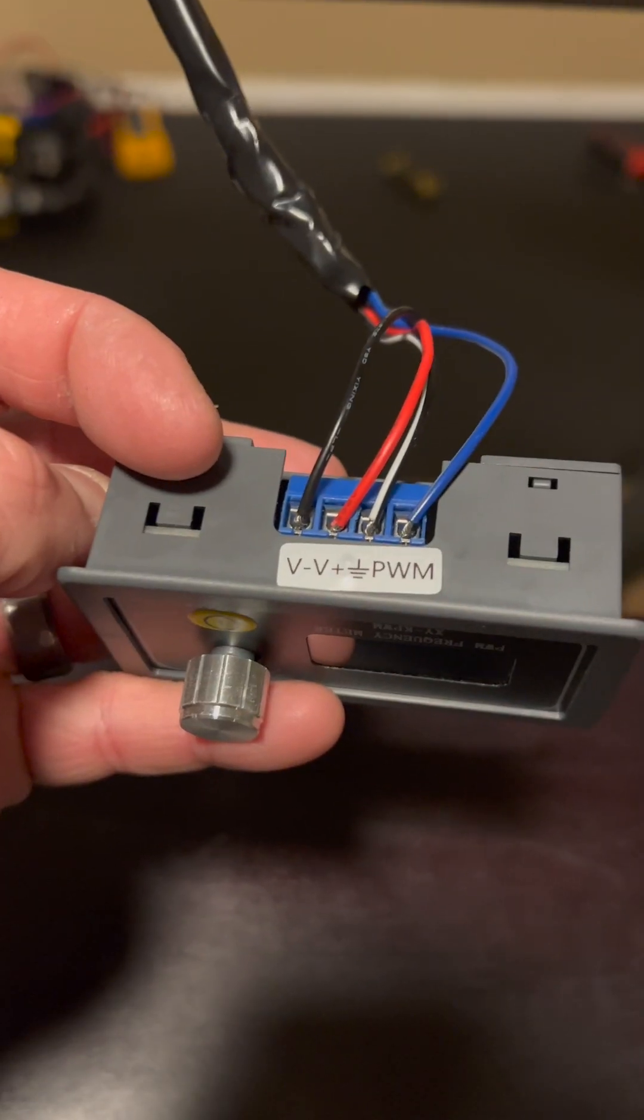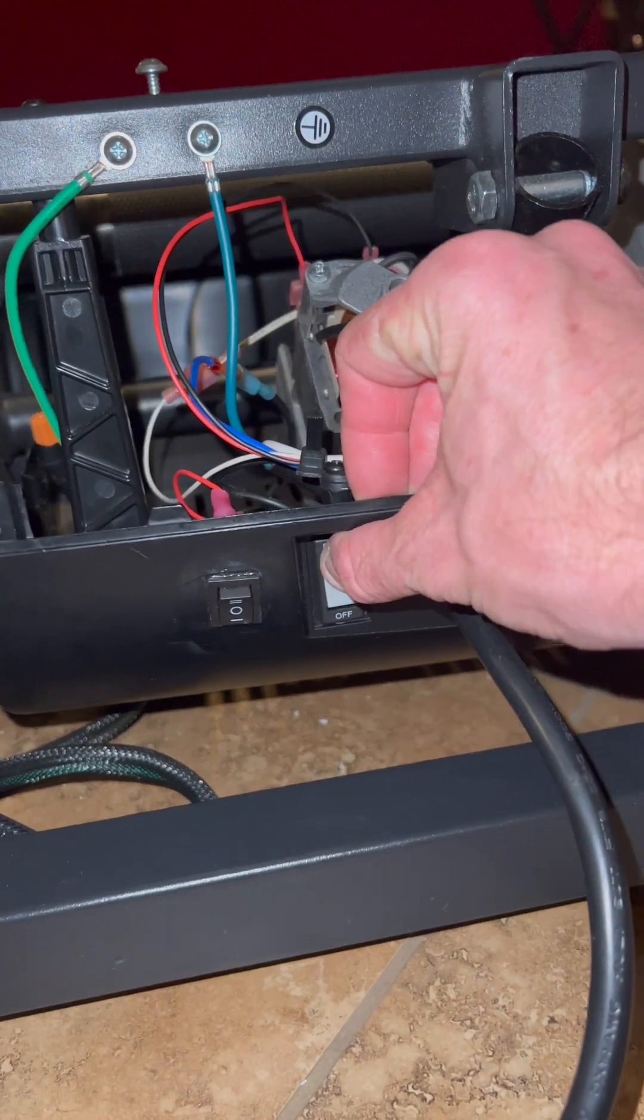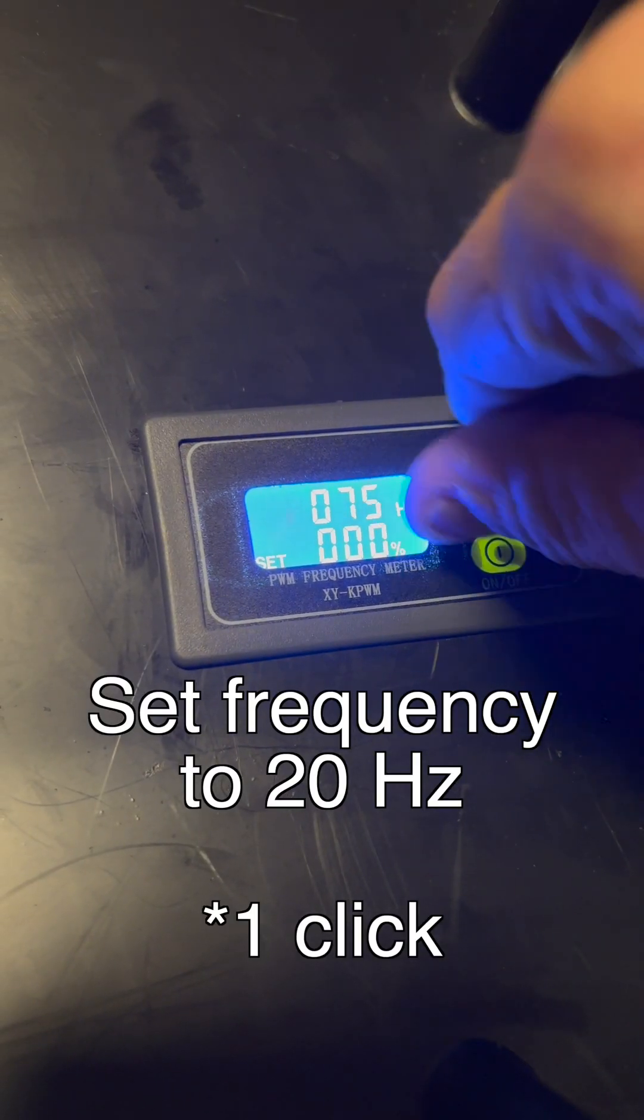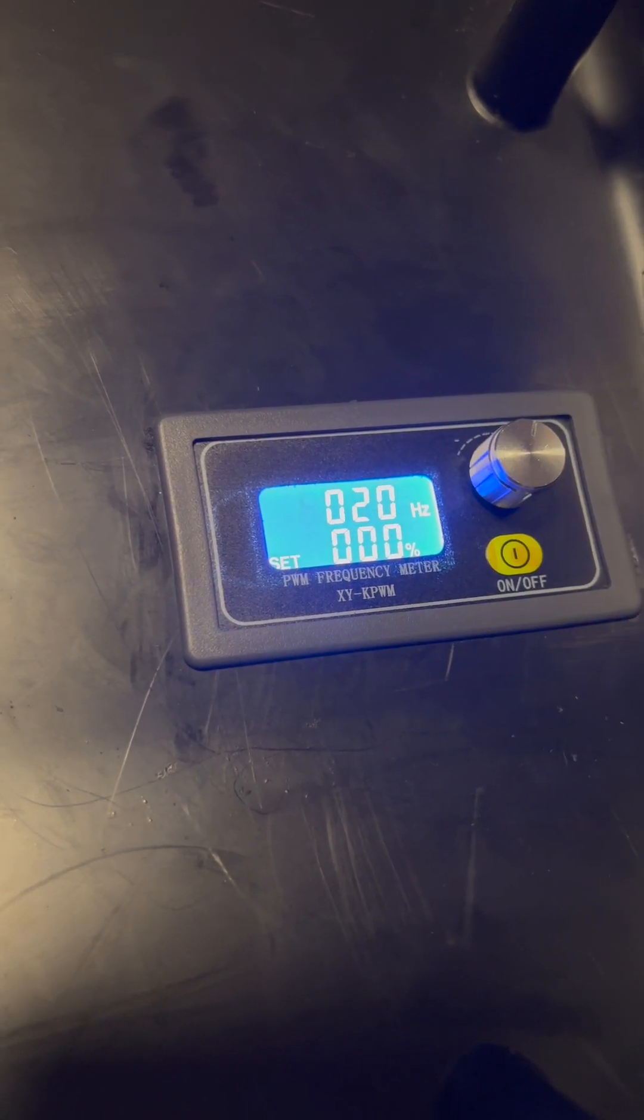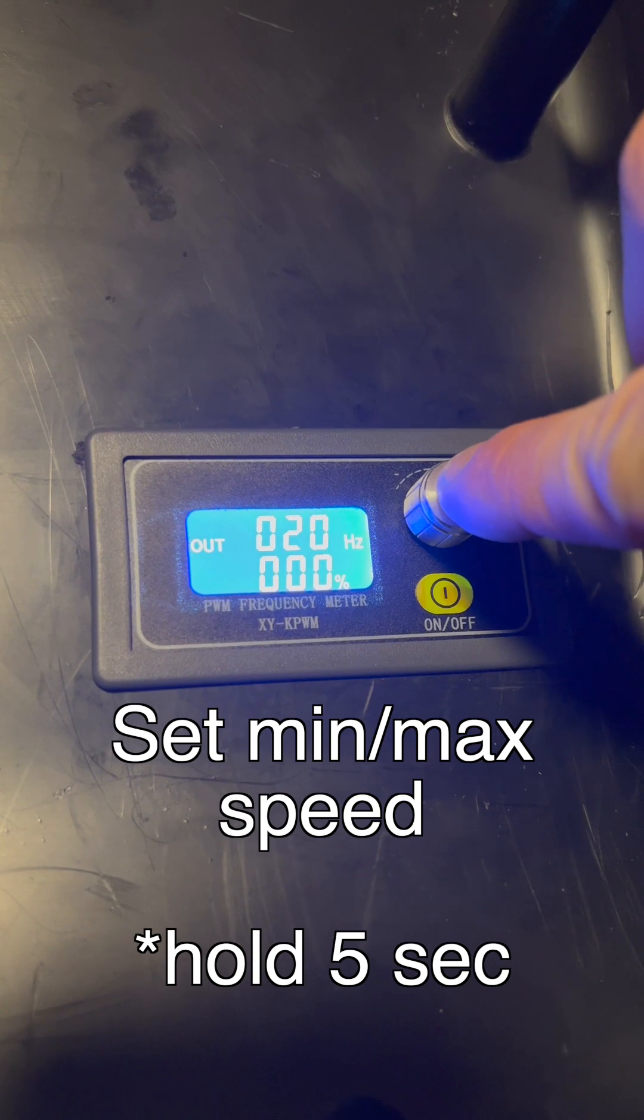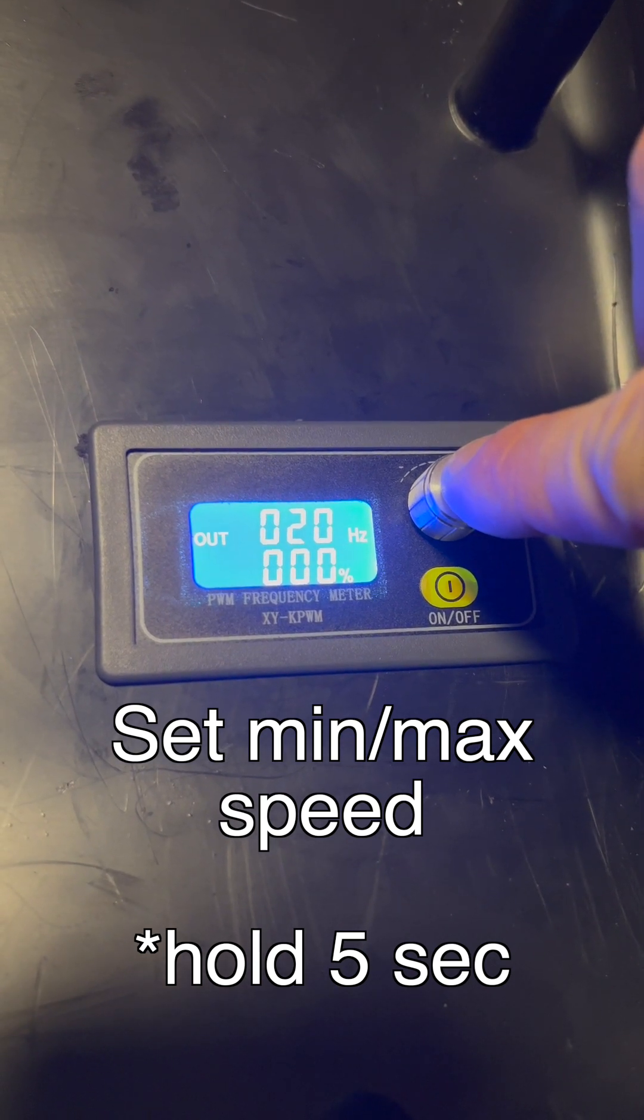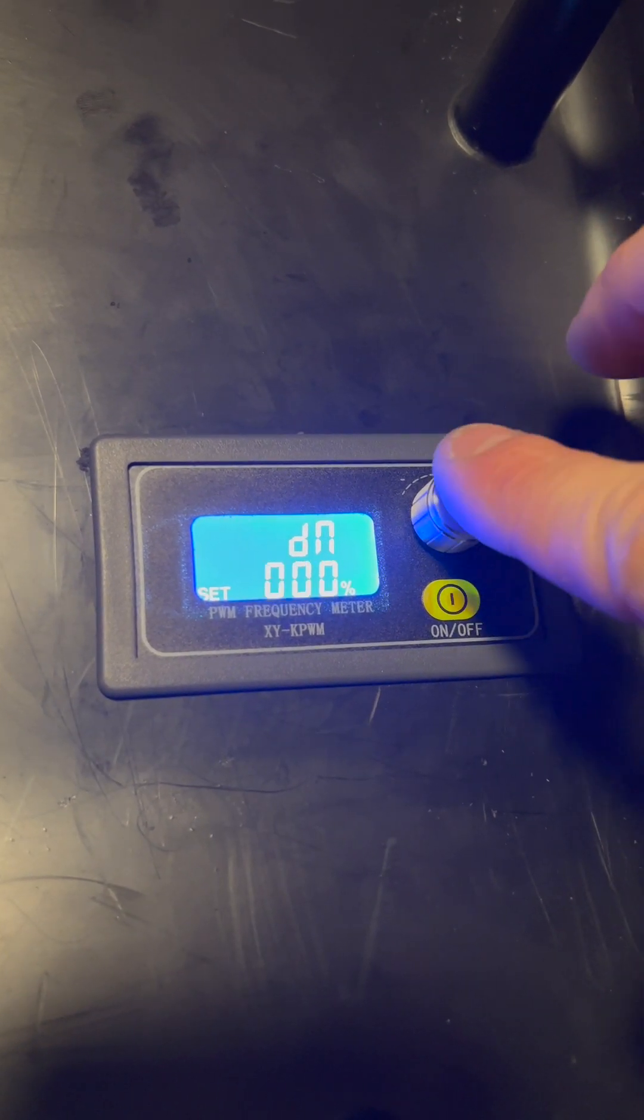Out of the box it comes at 100hz but you'll need to set it to 20hz in order to match the MC2100 control board. Then you can hold down for five seconds in order to adjust the minimum and maximum percentages. Based on research and watching other YouTube videos, I set mine to 85% which should match speed 12.